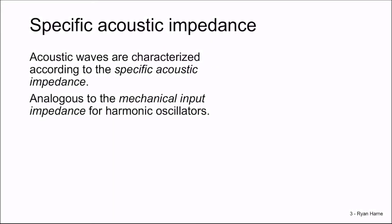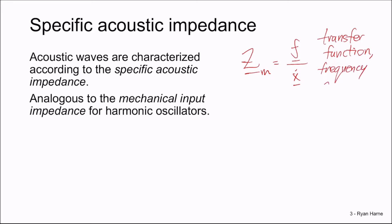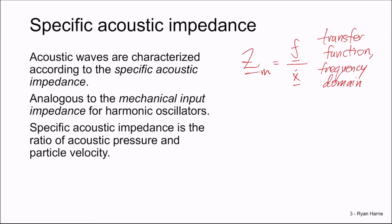The specific acoustic impedance is analogous to the mechanical input impedance for harmonic oscillators. If you remember, the mechanical input impedance was complex capital Z sub m, the ratio of the complex force divided by the complex velocity — a transfer function existing in the frequency domain. Specific acoustic impedance is analogous to this. It is the ratio of acoustic pressure and particle velocity, denoted as lowercase z.